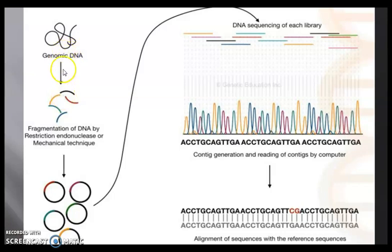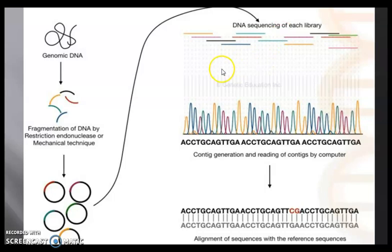First is the fragmentation of DNA with restriction endonucleases or by mechanical means. Later, formation of libraries of sub-fragments where the fragments are cloned into vectors. Then sequencing of each library, followed by reading the contigs by computer to generate the complete sequence.